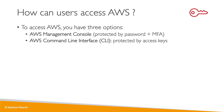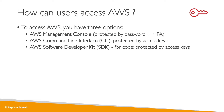Then there is the CLI, Command Line Interface. This is something we will set up on our computer, and it is protected by access keys — credentials we're going to download in a few seconds that will allow us to access AWS from our terminal. Then finally, there is the SDK, the AWS Software Development Kit, which is used whenever you want to call APIs from AWS from within your application code.